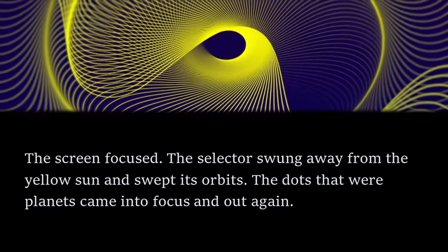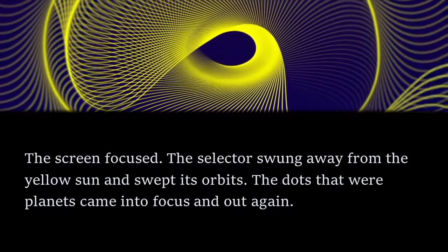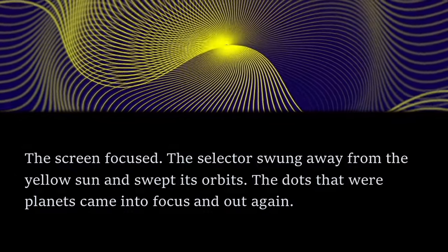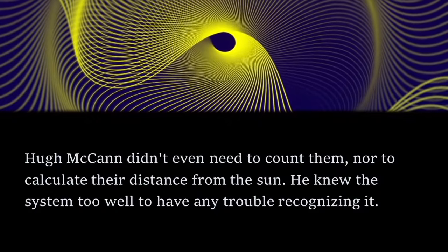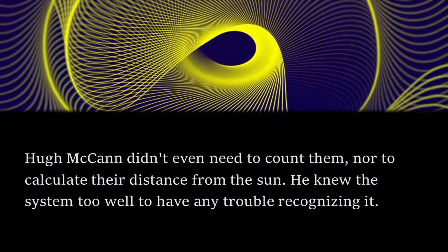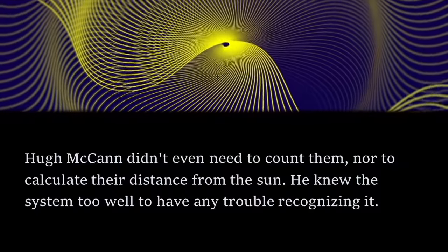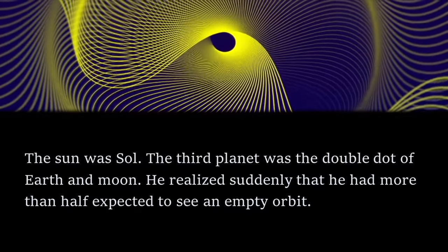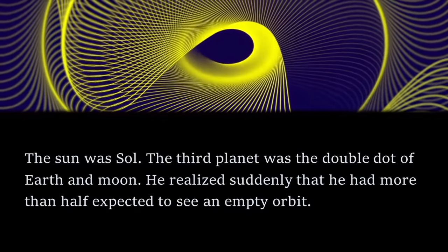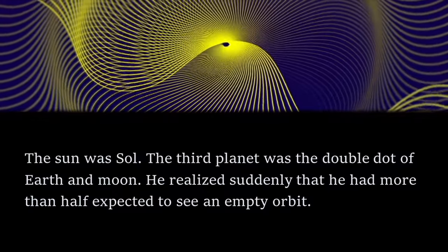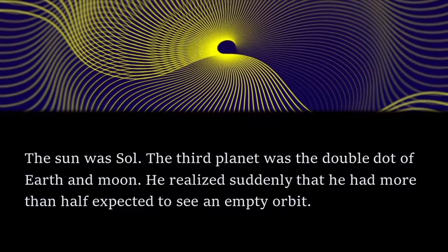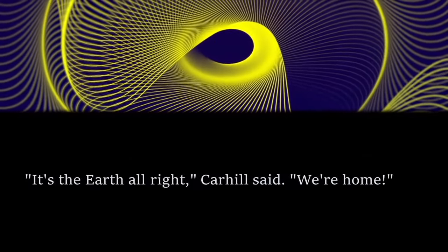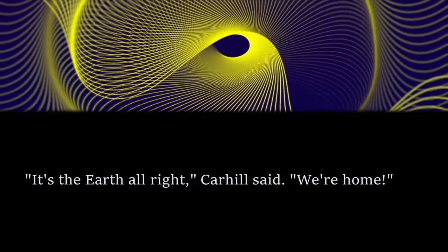The screen focused. The selector swung away from the yellow sun and swept its orbits. The dots that were planets came into focus and out again. Hugh McCann didn't even need to count them nor to calculate their distance from the sun. He knew the system too well to have any trouble recognising it. The sun was Sol. The third planet was the double dot of Earth and Moon. He realised suddenly that he had more than half expected to see an empty orbit. It's the Earth, all right, Carhill said. We're home!